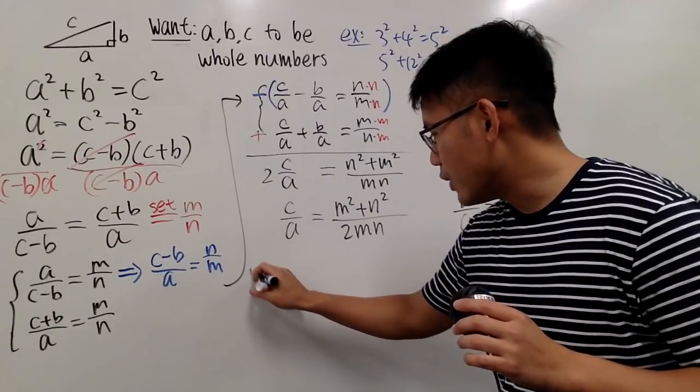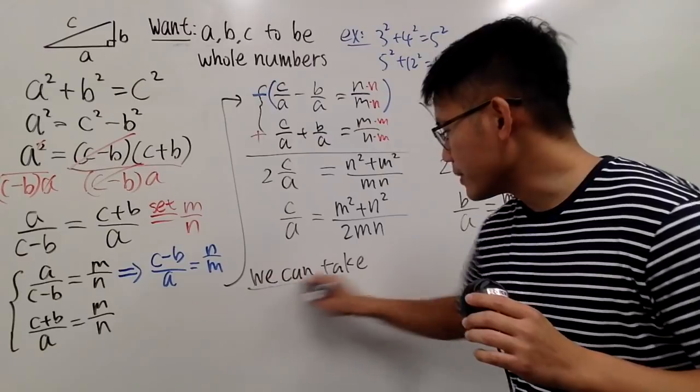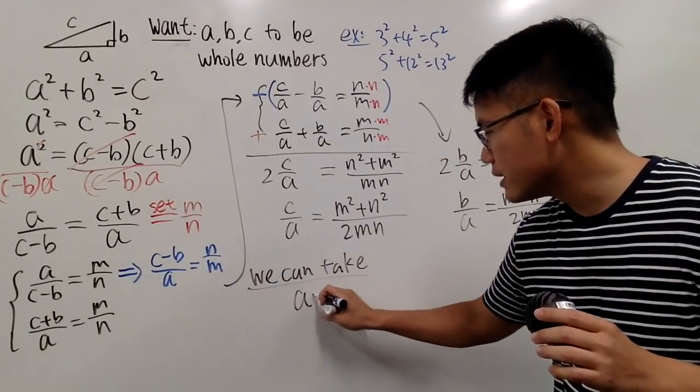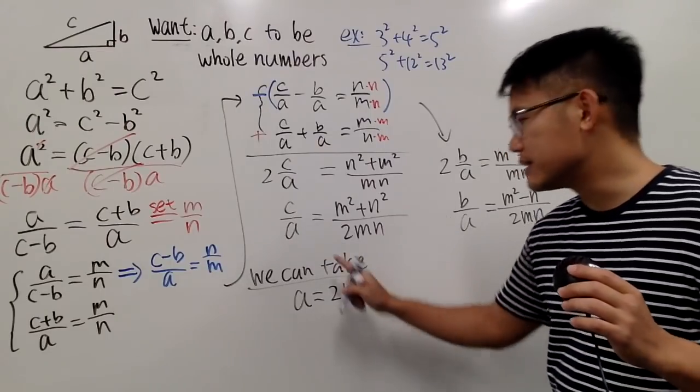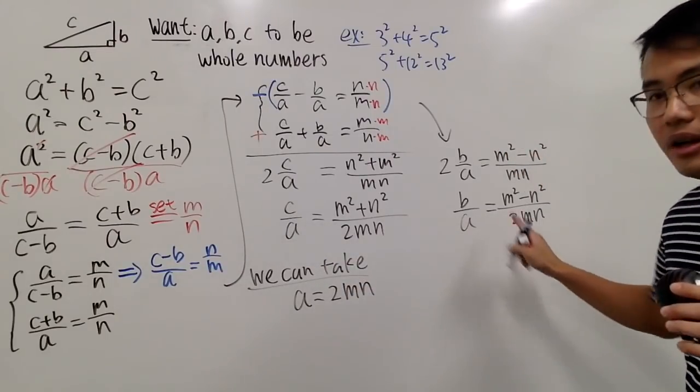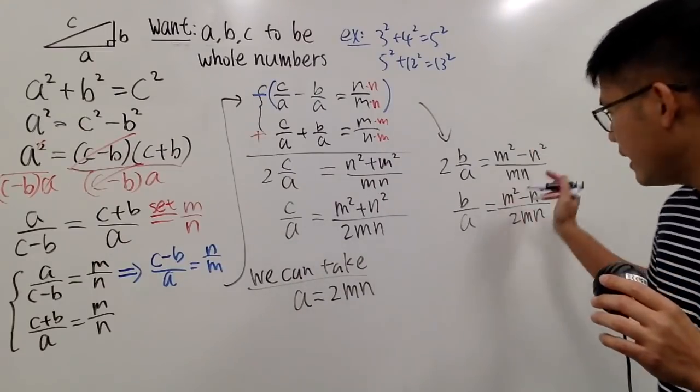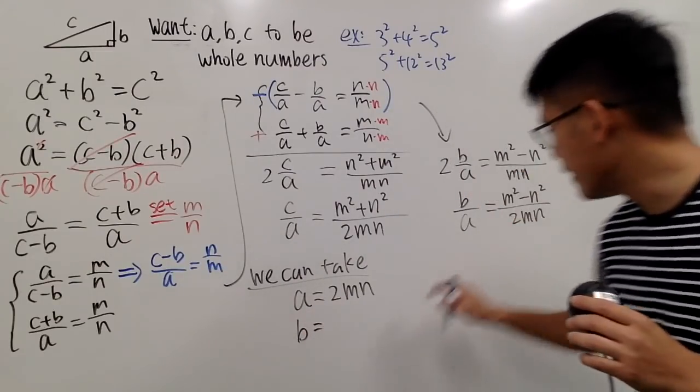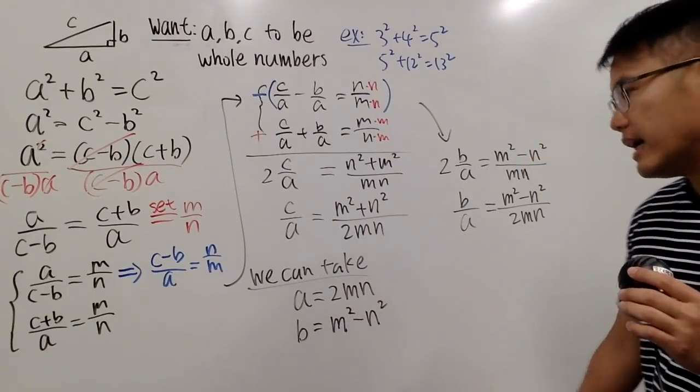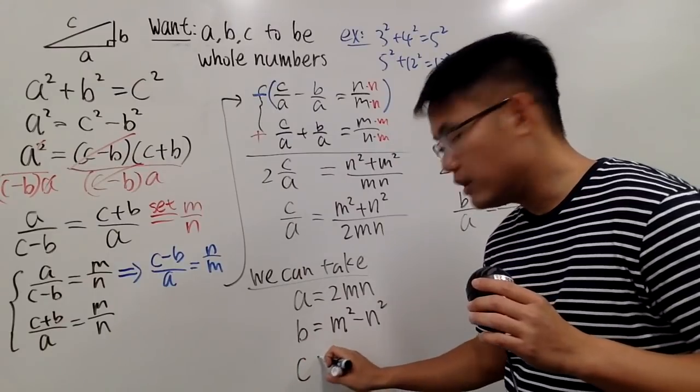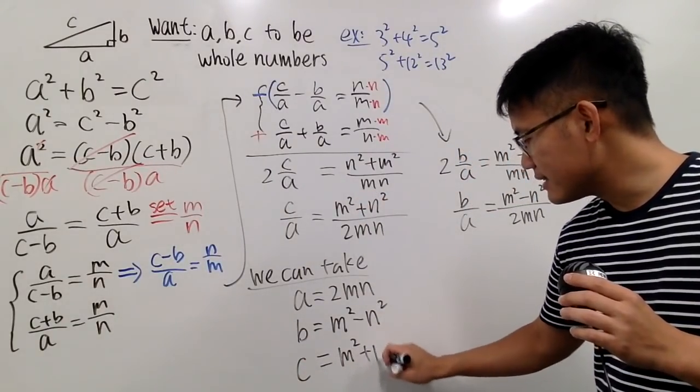Anyway, I'm just going to tell you guys that we can take the following. Let me write down A first. A is 2MN. And notice, this equation right here also agrees A should be 2MN, so we are on the right track. Next, we have B. I will take that to be M squared minus N squared. And lastly, right here, we have C, which is equal to M squared plus N squared.